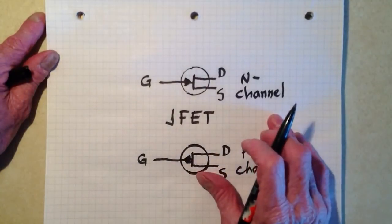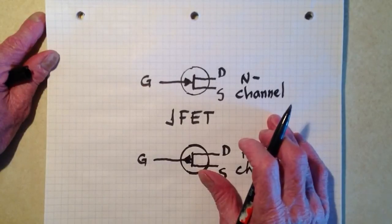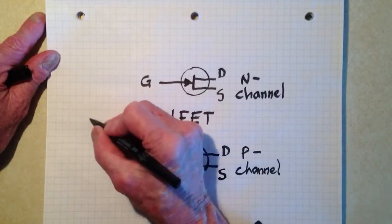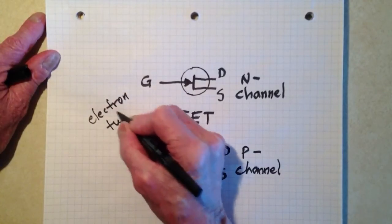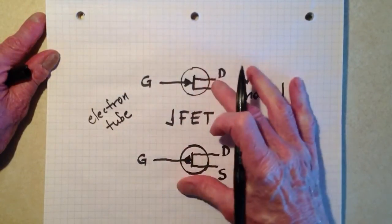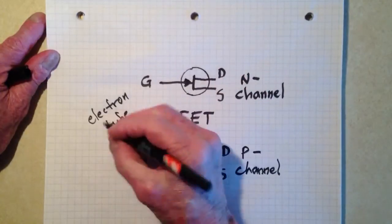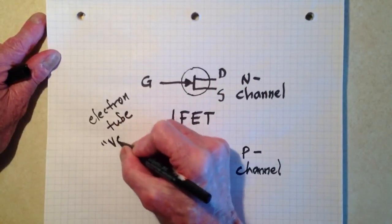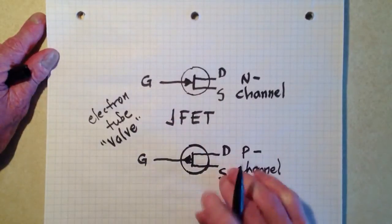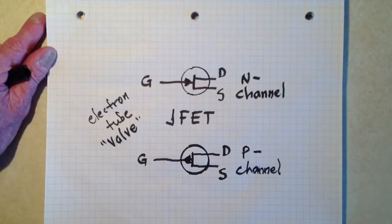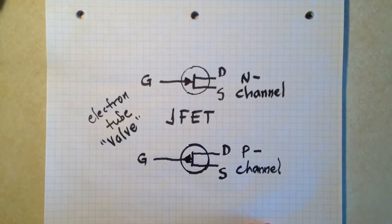Now, the junction field effect transistor more closely resembles the good old electron tube in terms of the way that it operates, a tube in England known as a valve. And in fact, that's exactly what a JFET is, is a current valve, just like a vacuum tube.